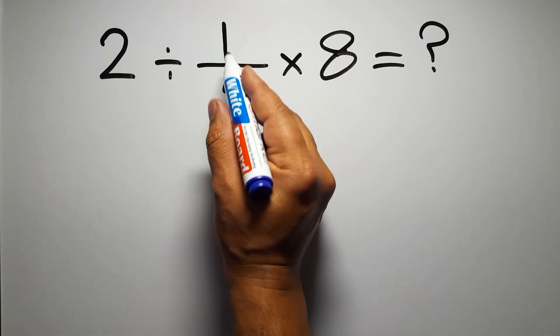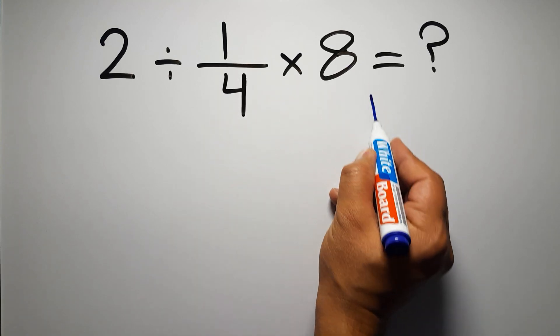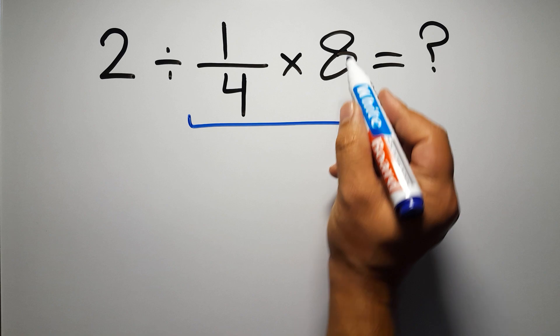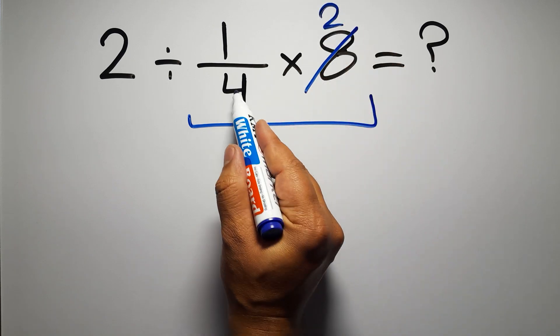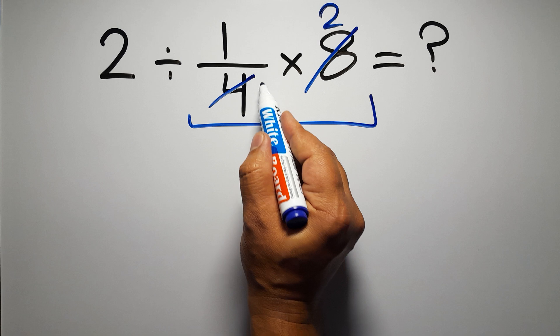First we do this multiplication, 1 over 4 times 8. 8 divided by 4 gives us 2, and 4 divided by 4 is just 1.